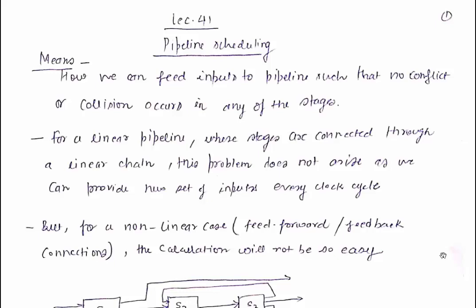I have already told you about a classification: linear pipeline versus nonlinear pipeline. In a linear pipeline, this sort of problem related to collision or conflict will not occur. We have to provide a new set of inputs in each clock cycle. We cannot provide more than one set of inputs in the same clock cycle. So for linear pipeline, we do not need pipeline scheduling because all the stages are connected through a linear chain.